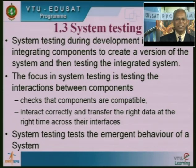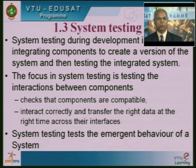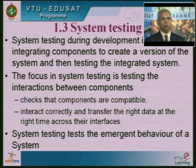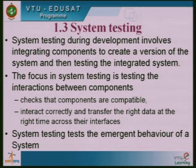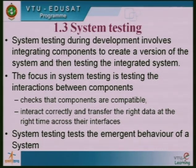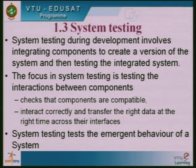System testing tests the emergent behavior of the system. Going back to the automobile example, we tested the gearbox and the engine individually. But when we put them all together, something called mileage emerges. Even though the engine and gearbox each meet their individual specifications, the overall mileage is only tested when the entire system is assembled together. This is what we call emergent behavior. Similarly in software, the overall system performance may reveal teething problems or interface and interconnection issues that only appear when all components are integrated. Such problems can be found during system testing.